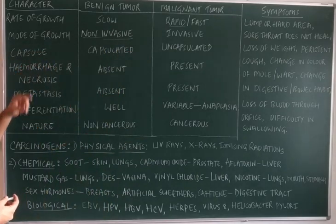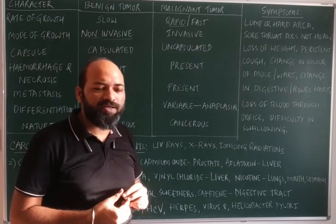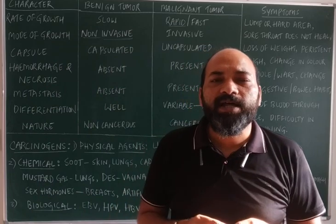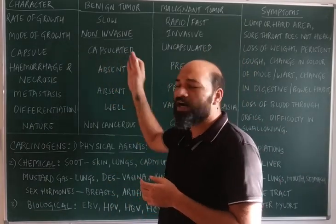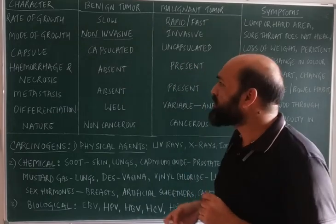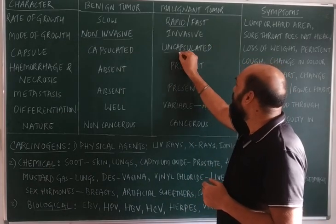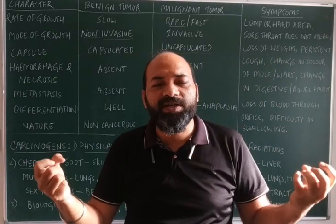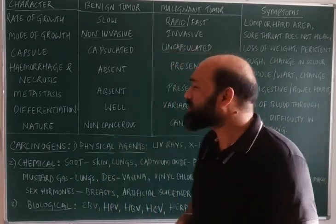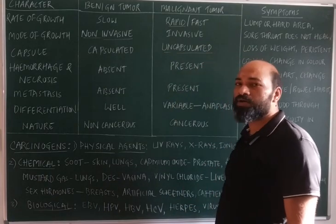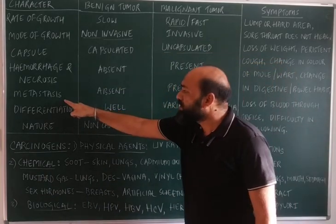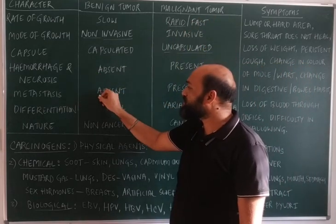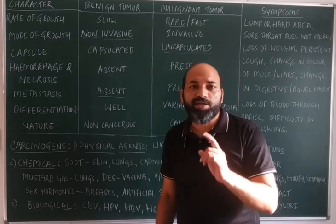The next difference is the capsule. Benign tumors are capsulated, meaning they are covered by a protective covering, which is why they remain localized. Malignant tumors are uncapsulated, meaning the outer layer of cancerous cells can separate from the tumor. That is the reason metastasis is exhibited by malignant tumors, whereas metastasis is totally absent in benign tumors.